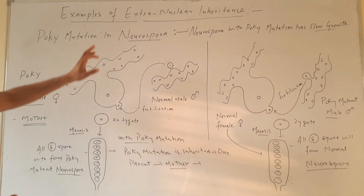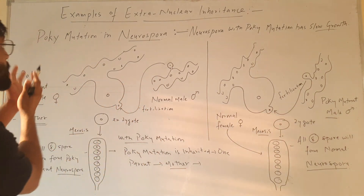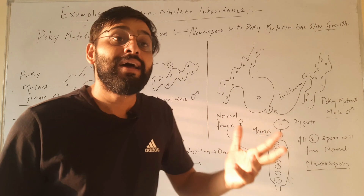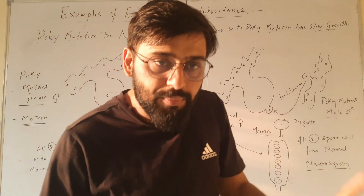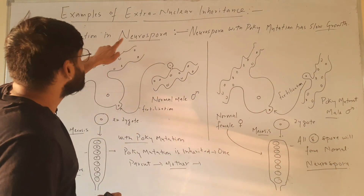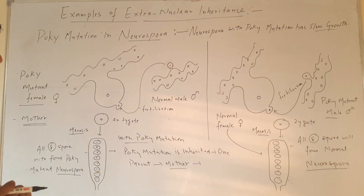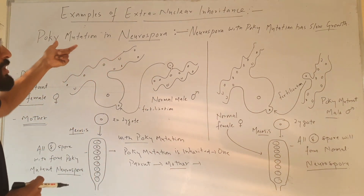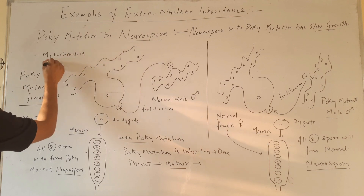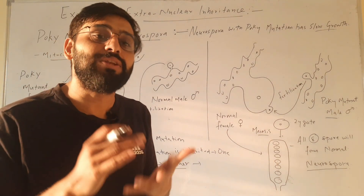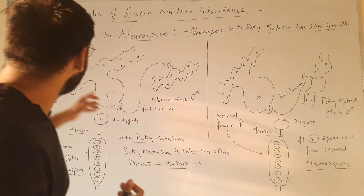Here you can see that extra nuclear inheritance is going on. In the case of poky mutation in Neurospora there is extra nuclear inheritance, because inheritance occurs through only one parent and that parent is the mother. In further investigation it was observed that the gene for poky mutation is present in mitochondria. If the gene is present in mitochondria, its inheritance will be extra nuclear because mitochondria is present in the cytoplasm.